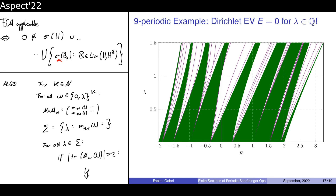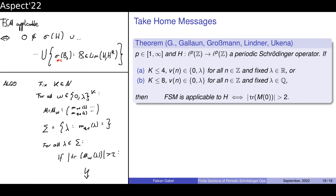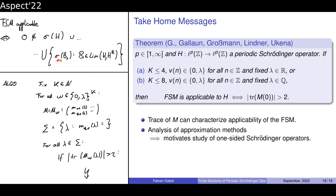Some take-home messages: we can now prove with this algorithm, also carried out computationally, that for periods smaller than or equal to four, all potentials of the zero-lambda form lead to an applicable finite section method. If the period is smaller than eight, this still holds when the scaling factor lambda is rational. The goal is to characterize applicability via just the trace of M — one easy criterion. Hopefully you also saw why it is interesting to study one-sided Schrödinger operators. Thank you very much.